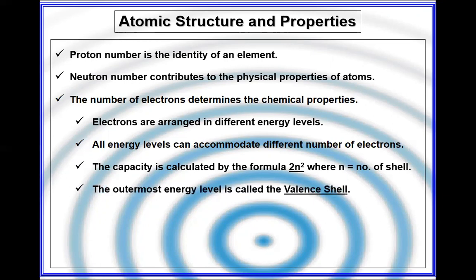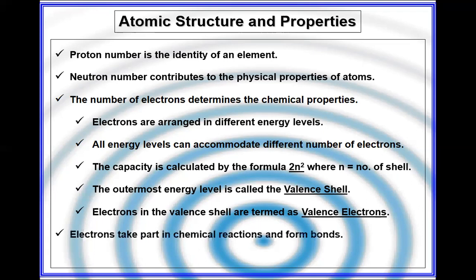The important thing is the last shell electrons, which we call valence electrons. The valence electrons depend upon the nature of the element. The valence electrons basically perform chemical bonding or chemical reactions.